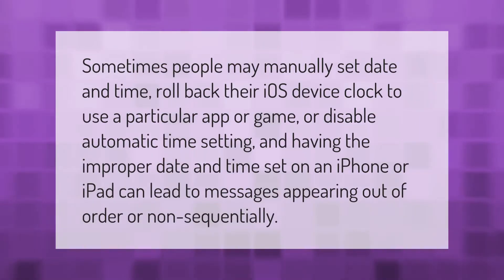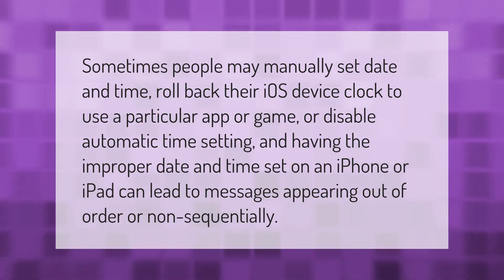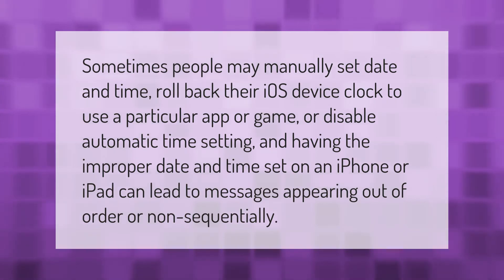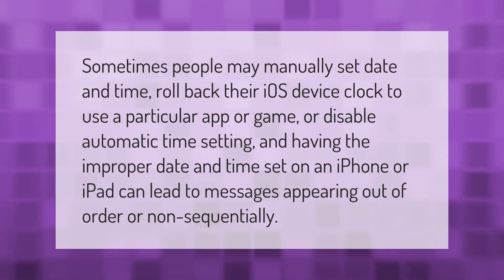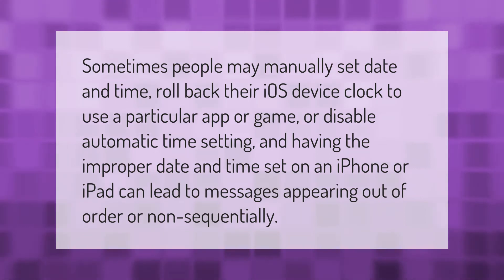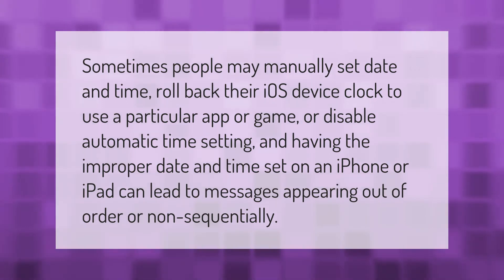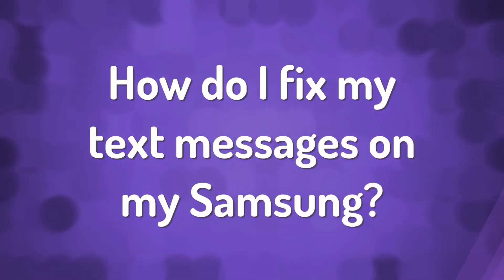Sometimes people may manually set the date and time, roll back their iOS device clock to use a particular app or game, or disable automatic time setting. Having the improper date and time set on an iPhone or iPad can lead to messages appearing out of order or non-sequentially.